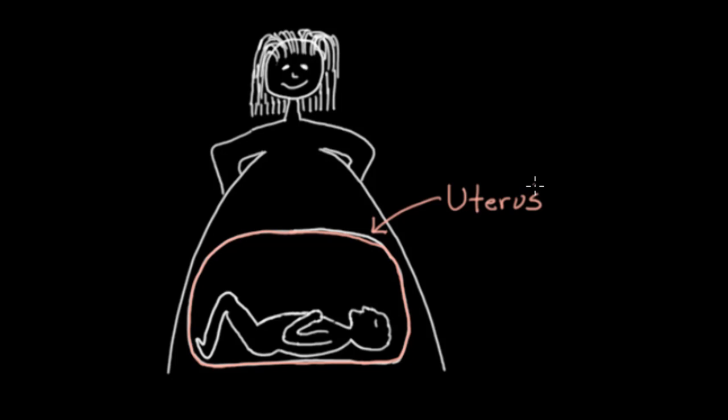So this uterus is the room in which the baby lives. But the environment in which the baby lives is actually very different from how we live outside, in the sense that there's amniotic fluid in this space. The baby is actually swimming in this fluid for nine months.